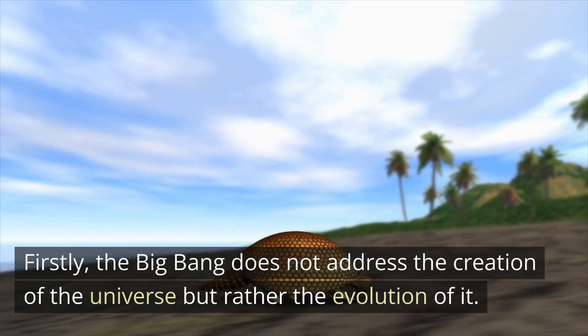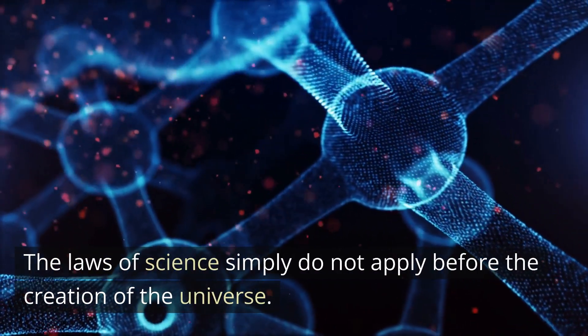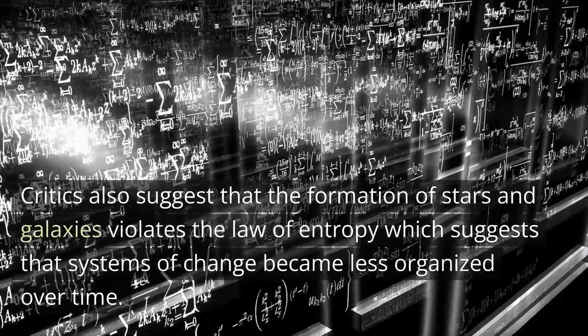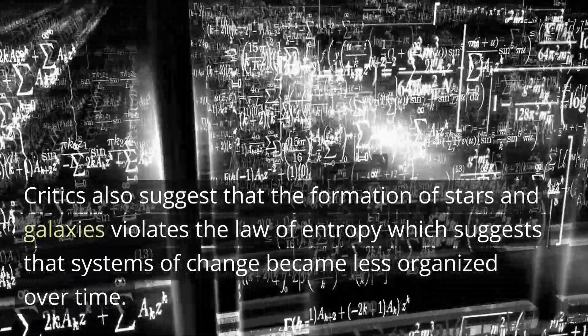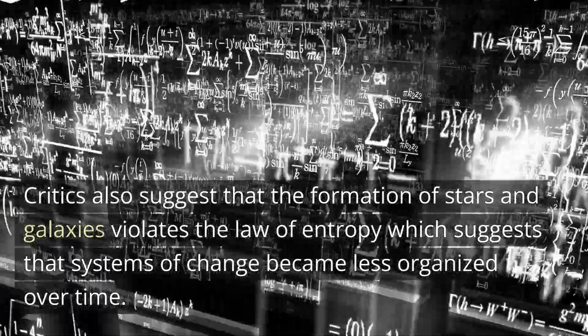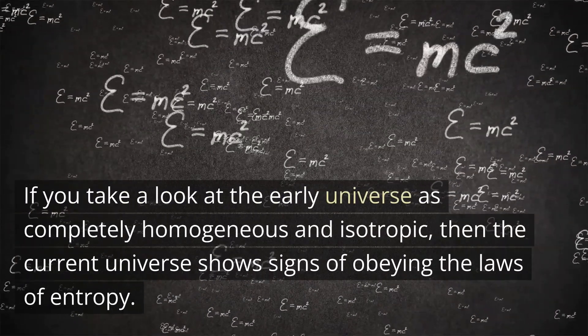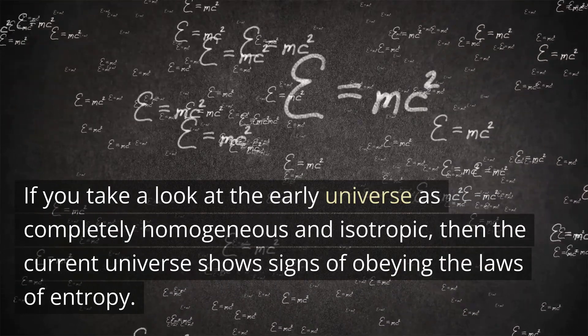Firstly, the Big Bang does not address the creation of the universe but rather the evolution of it. The laws of science simply do not apply before the creation of the universe. Critics also suggest that the formation of stars and galaxies violates the law of entropy, which suggests that systems of change became less organized over time. If you take a look at the early universe as completely homogeneous and isotropic, then the current universe shows signs of obeying the laws of entropy.